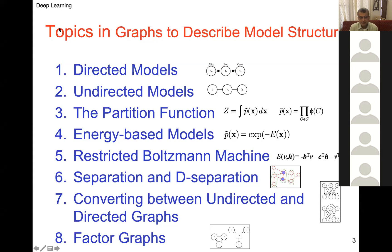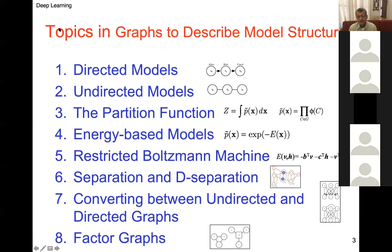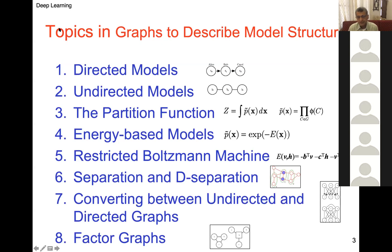Topic three is the partition function. The probability distribution represented by an undirected graphical model is captured by a Gibbs distribution, which has two parts: an unnormalized distribution as a product of factors associated with edges, and a partition function Z — an integration of the unnormalized distribution over all possible values. Topic four is energy-based models, a classic formulation gaining renewed interest in deep learning.